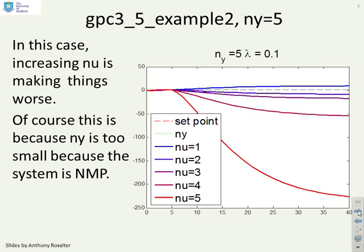Let's look at the second example then. Example 2, you'll remember, has a non-minimum phase characteristic. And again, for completeness here, I've started by just doing ny equals 5. And in this particular case, what you can see is that as nu increases, the performance actually gets worse. And that's because of the non-minimum phase characteristic in combination with a low output horizon.